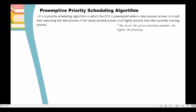For us to be able to compute the average turnaround time, we need first to compute the turnaround time of each of our given processes. And for us to compute the turnaround time, we need first to determine the completion time of each of our given processes.